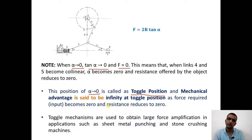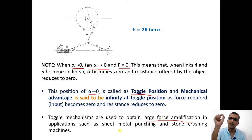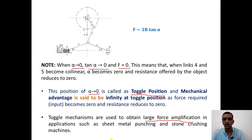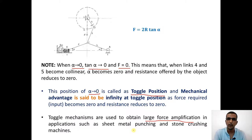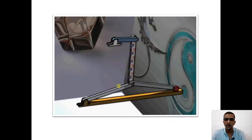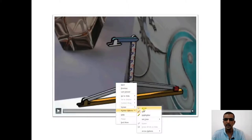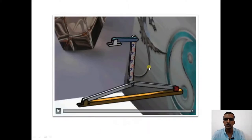Though it is theoretical and not practically possible, it illustrates the power of the toggle mechanism. When alpha tends to zero, the corresponding position is the toggle position, and mechanical advantage is theoretically infinity. In summary, we can obtain large force amplification with the application of a small amount of force. Applications include sheet metal punching, stone crushing machines, and toggle clamps. Let us now go through a short video to see how the toggle mechanism works.